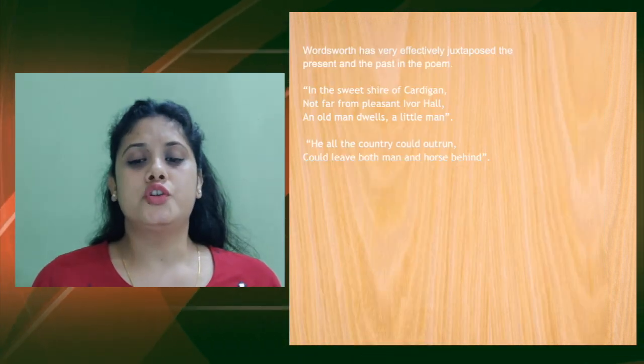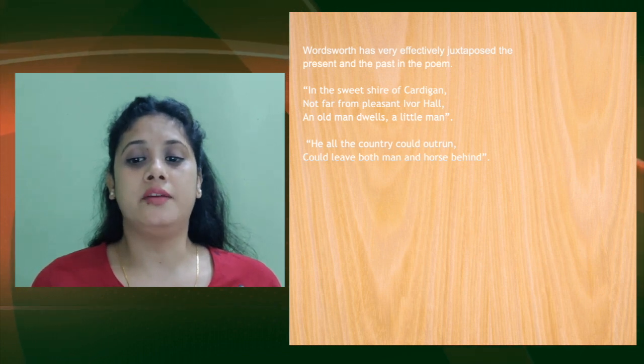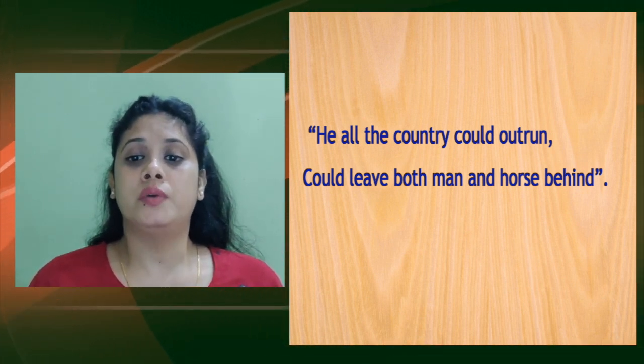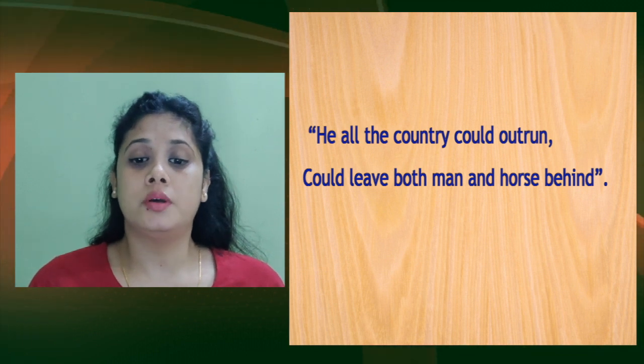Wordsworth has very effectively juxtaposed the present and the past in the poem. He first describes Simon Lee as he lives in penury in Cardiganshire: 'In the sweet shire of Cardigan, not far from pleasant Ivor Hall, an old man dwells, a little man.' He then takes us to the past where Simon Lee was portrayed as a strong and able huntsman whom no one could rival: 'He all the country could outrun, could leave both man and horse behind.' The past and present are both important for the story.